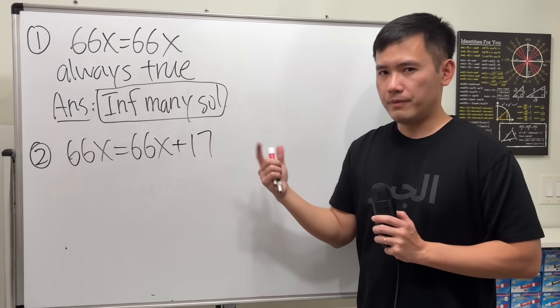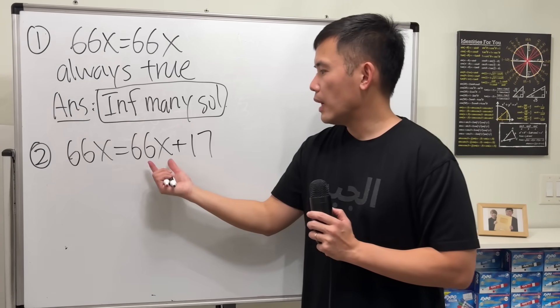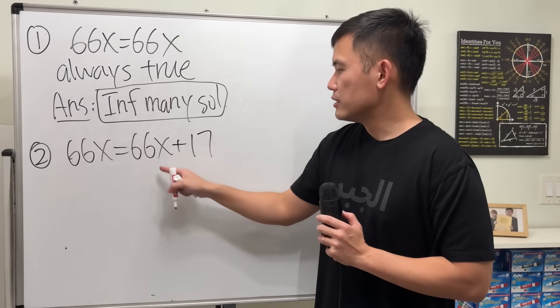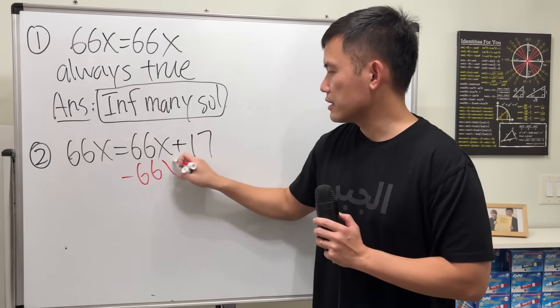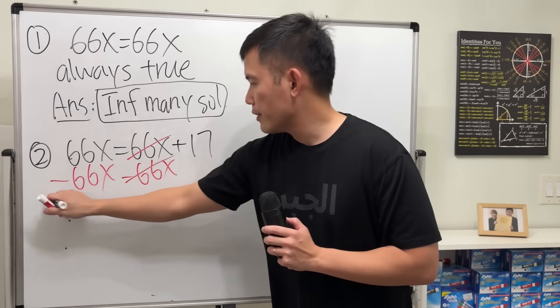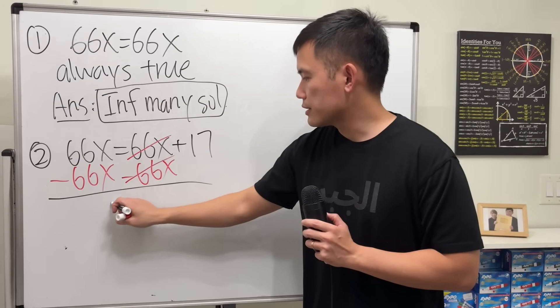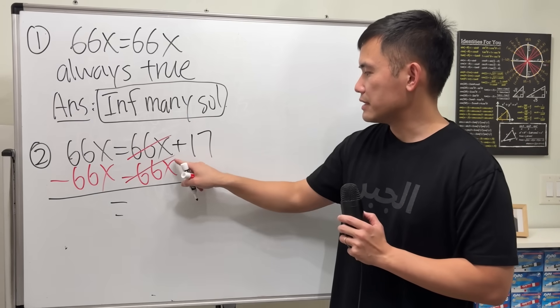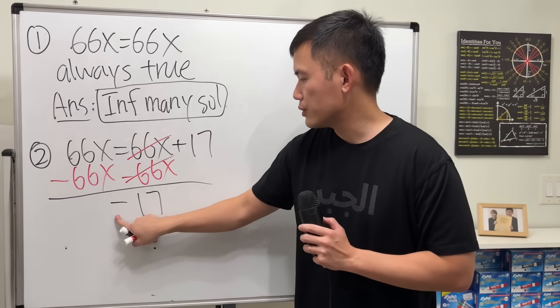If you want to solve this equation, what would you do? Well, I want to put all the x's on one side. So maybe that's minus 66x here and do the same thing here. This and that cancel. This is 0. That's good.